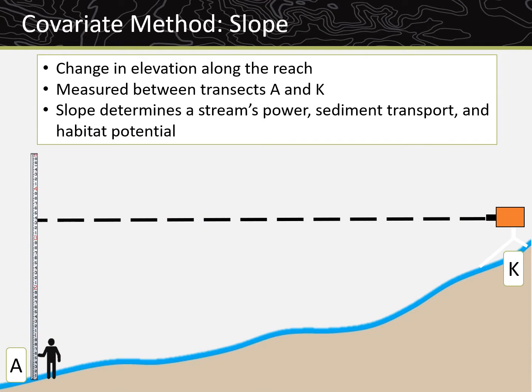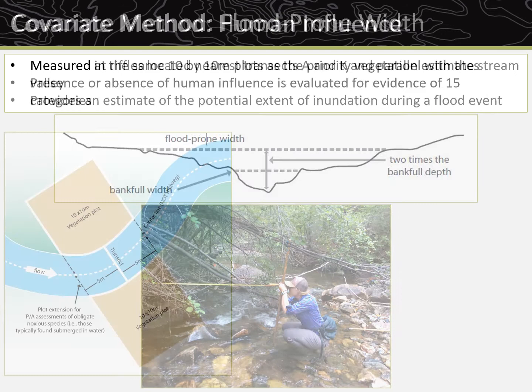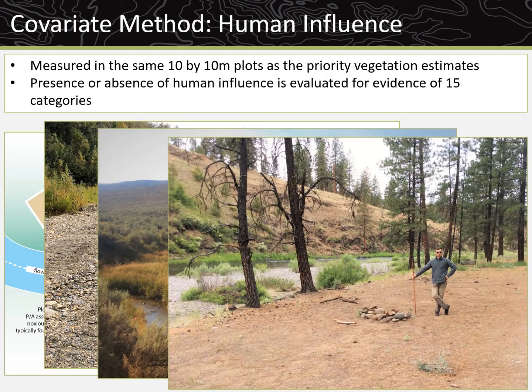Slope, or change in elevation along the reach, is measured between transects A and K. Slope is measured because it determines a stream's power and its ability to transport sediment, as well as the type of habitat conditions likely to occur. Flood prone width is measured at riffles located nearest to transects A and K that are parallel with the stream valley, and provides an estimate of the potential extent of bench or floodplain inundation during a flooding event. Human influence is measured in the same 10 by 10 meter plots as the priority vegetation estimates, evaluating the presence or absence of 15 different influences including roads and vehicles, grazing, and recreation.